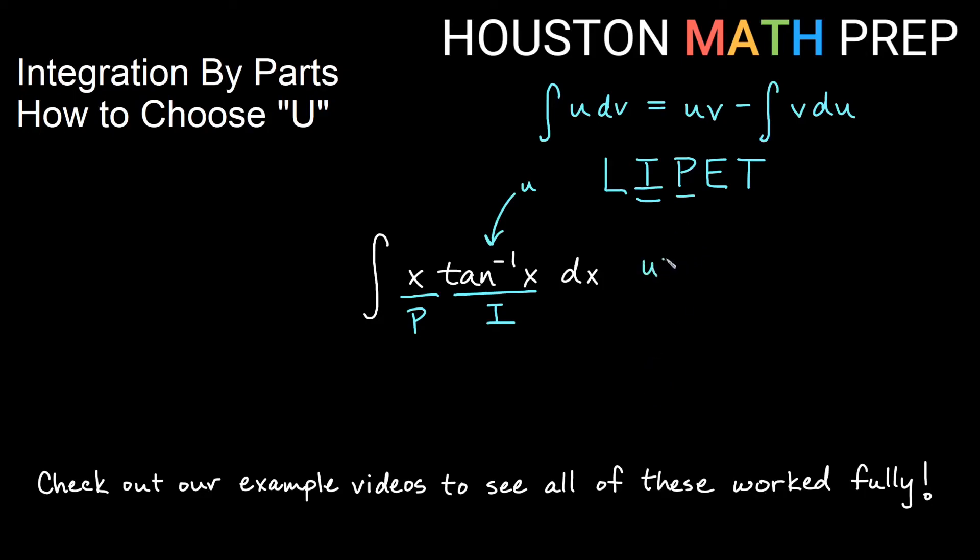In this case, we'll have U is inverse tangent of x. And we'll have that dv is x dx. And then derivative of inverse tangent would be 1 over 1 plus x squared dx. And the antiderivative of x would be 1 half x squared.